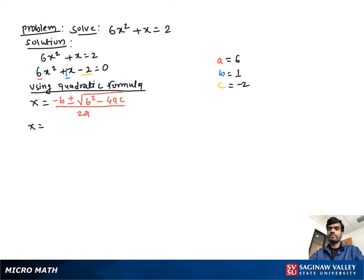Now using the quadratic formula, x = (-b ± √(b² - 4ac)) / 2a. Now I'm substituting the value of a, b, c in this equation. We get x = (-1 ± √(1² - 4(6)(-2))) / 2(6).